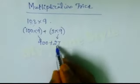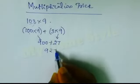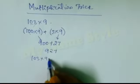So it equals 927. So 103 into 9 is equals to 927.